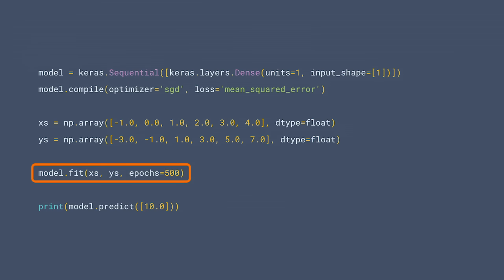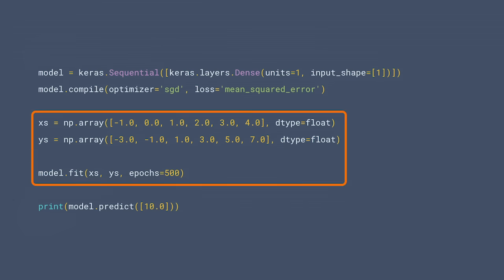And in this case, it will go through that loop 500 times, making a guess, calculating how accurate that guess is, and then using the optimizer to enhance that guess, and so on. The data itself is set up as an array of x's and y's, and our process of matching them to each other is in the fit method of the model. We literally say fit the x's to the y's and try this 500 times.